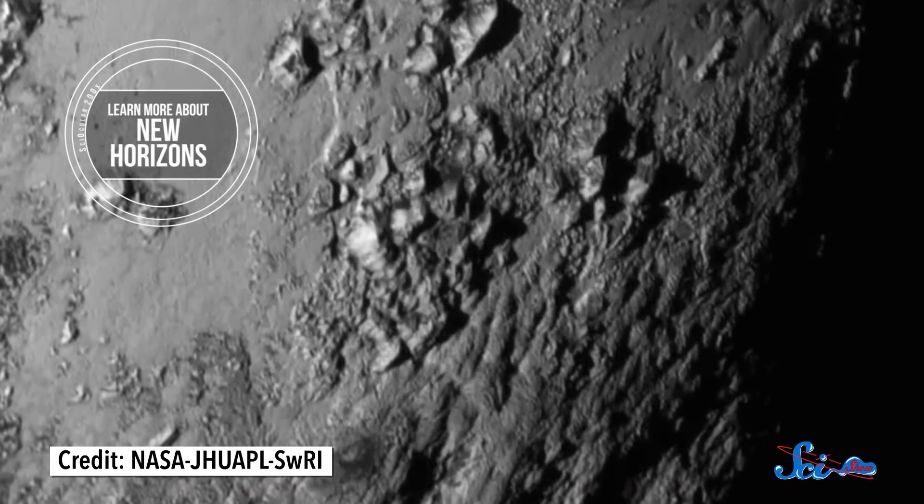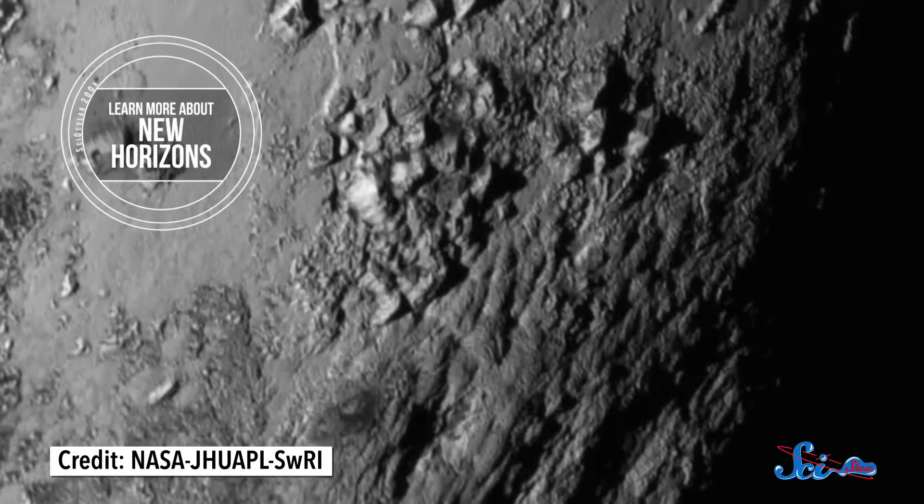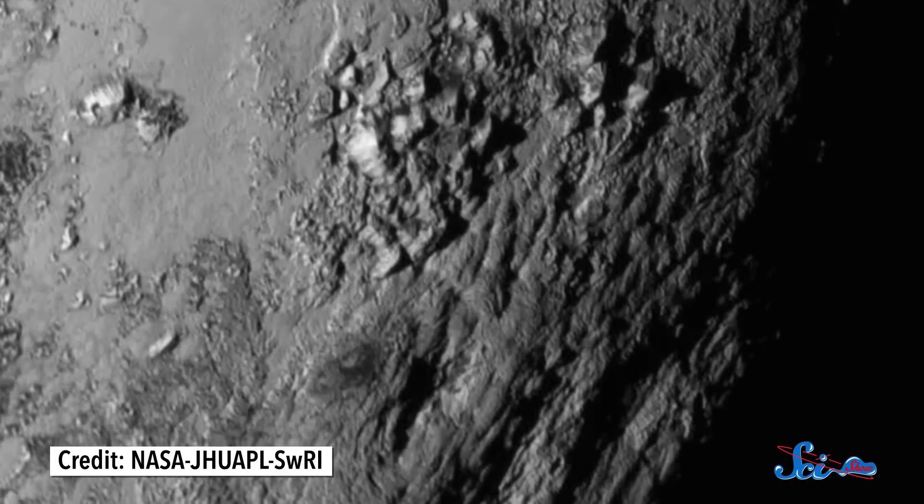If you joined us on the edge of our collective seats when the pictures started coming in, you'll recall that one of the very first images we got showed that Pluto has mountains and a relatively smooth surface, signs of an active outer layer that scientists were really not expecting.